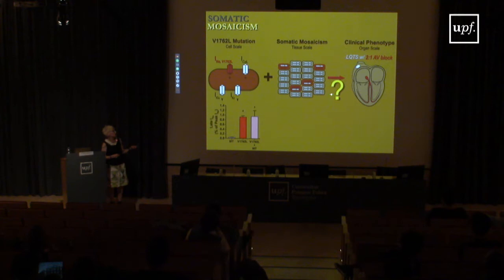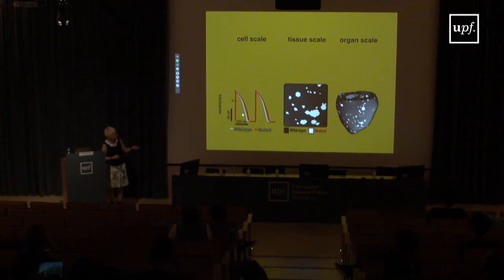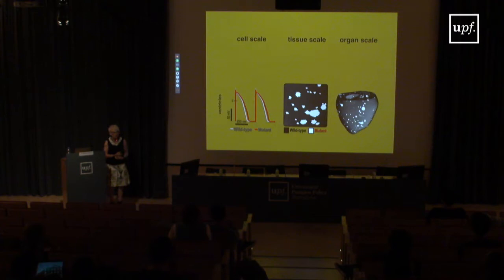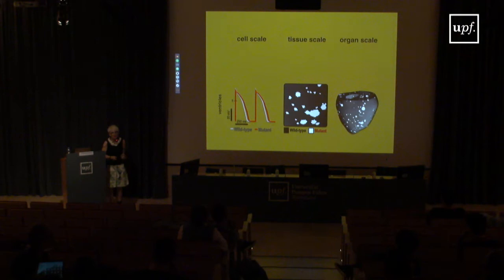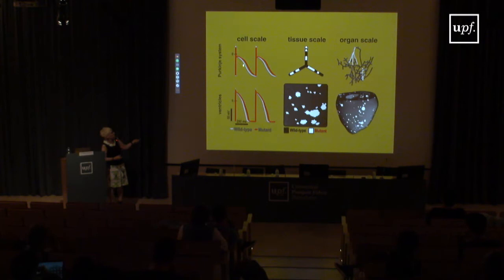We were asked to figure this out, which is how we came on board. We created a model of the little girl's heart with her wild-type and mutant cells, distributed the mutant cells in a variety of stochastic ways, and tried many parameter variations. No matter what we did, we could never get an arrhythmia — until we realized we weren't accounting for the Purkinje conduction system. The heart is mosaic, so her Purkinje system could also be mosaic, and we modeled that as well.